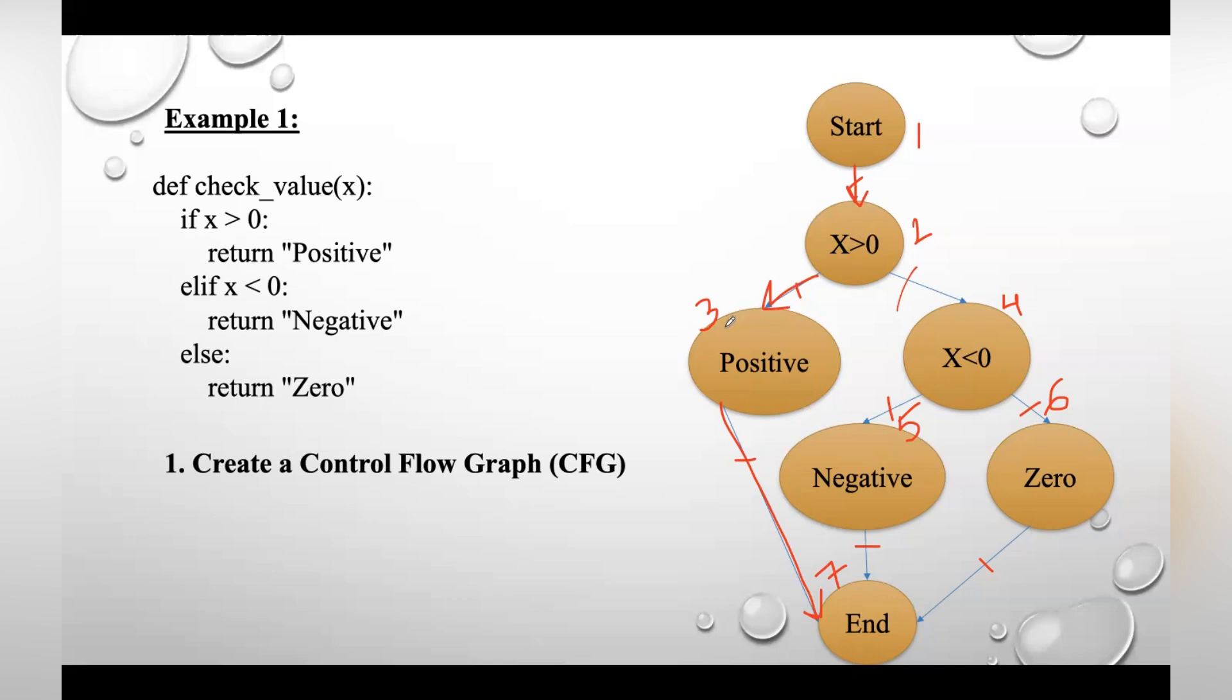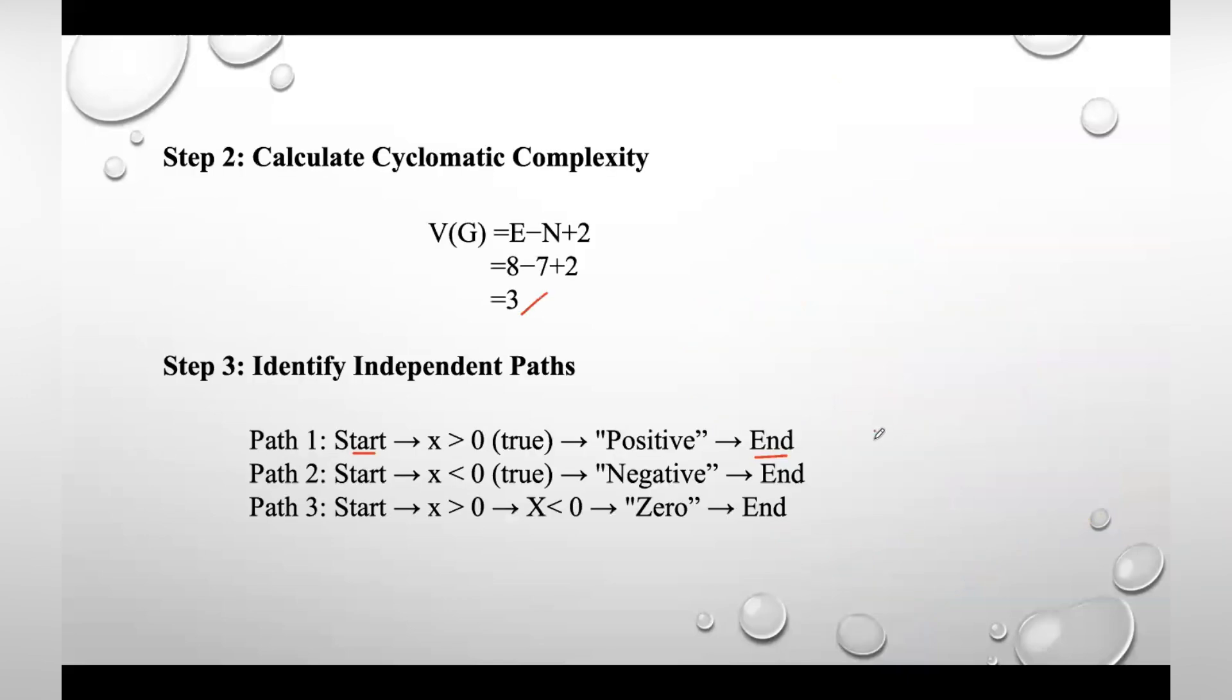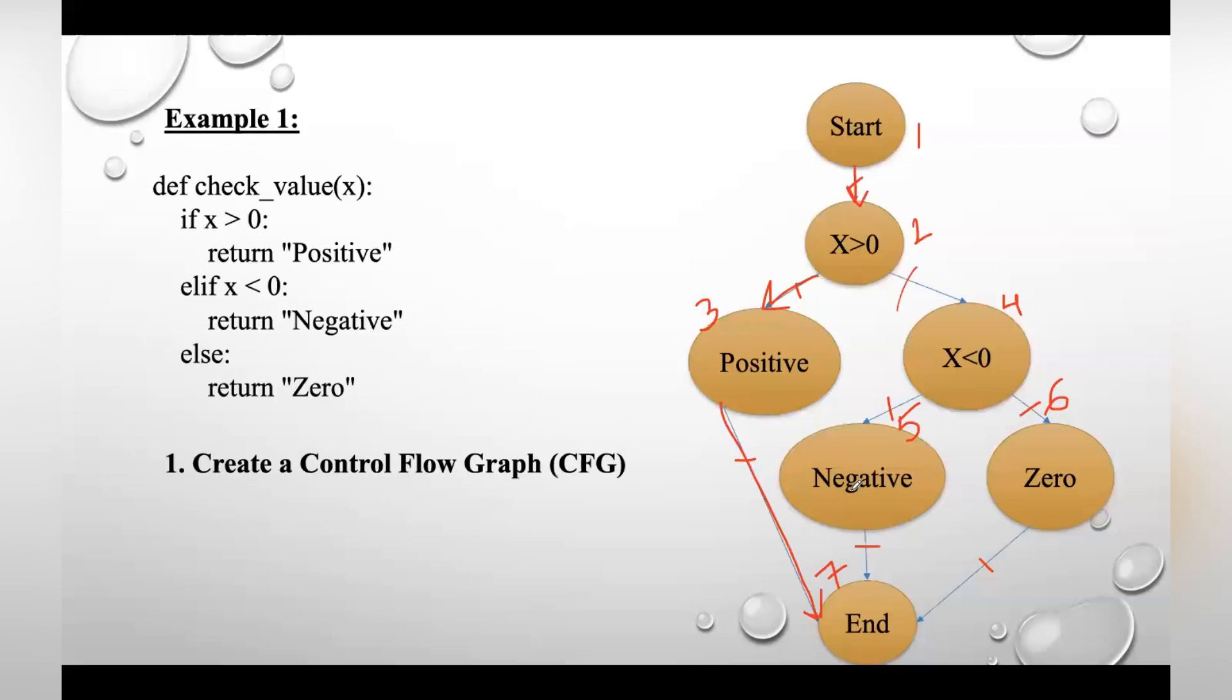You can write it with block numbers—that is 1, 2, 3, and 7. So the first path can be either written as 1-2-3-7. Take the second path: start, x > 0, move to this and then end.